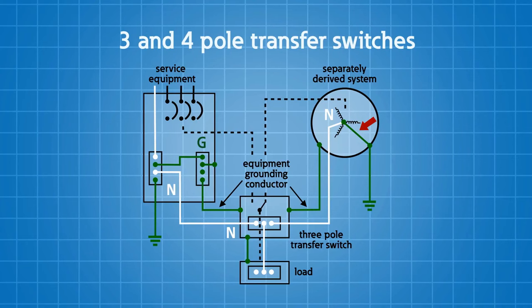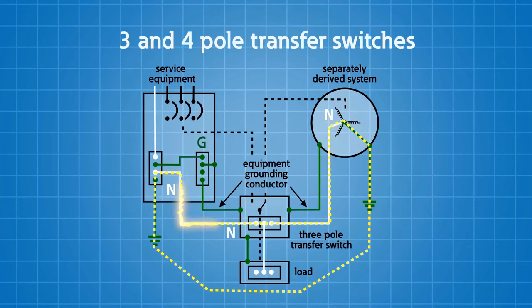But what if I accidentally bonded the neutral to the ground in the generator and I only have a three-pole transfer switch? How do I fix it? Do I have to buy a four-pole transfer switch? Sure, you could. Or you could simply unbond the neutral in the generator. But you must be extremely careful on how you operate a system like this because the return current for the generator neutral will flow back through the other separately derived system or transformer. This is especially important for the electrical workers who will be servicing the equipment.